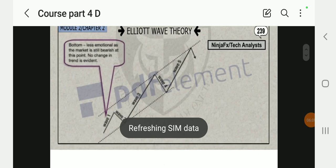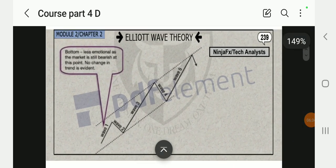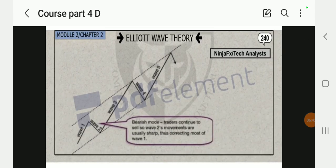Wave one: bottomless emotional as the market is still bearish at this point. No change in the trend is evident. There's still no confirmation that the market is going down for real. It could just do a corrective wave of maybe 10 to 15 pips then go back up to the motive wave. As the market goes bearish mode, traders continue to sell. Wave two movements are usually sharp, thus correcting most of wave one. You can see people just go bearish at the top of wave two.